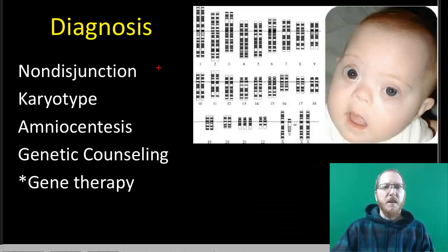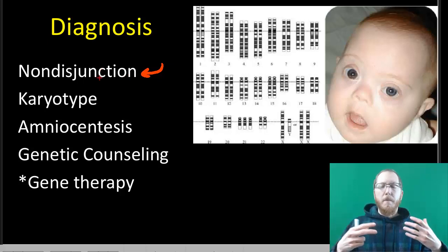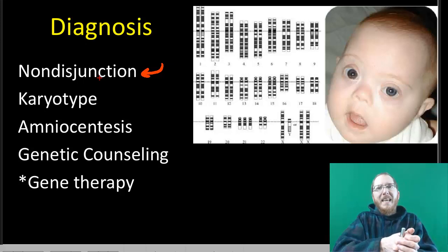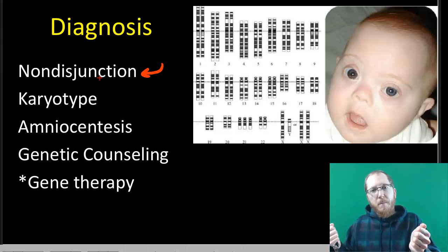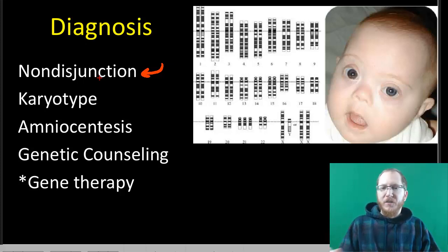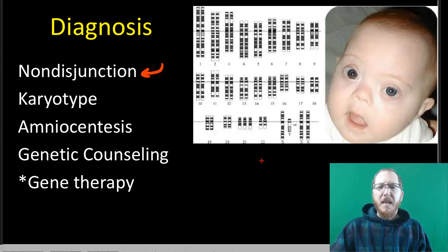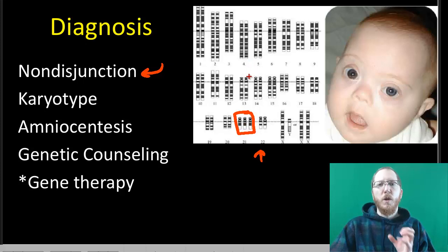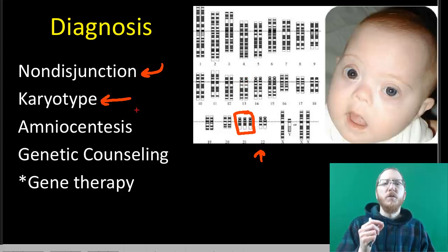To diagnose these conditions, if you want to find out if non-disjunction has occurred — where during meiosis the chromosomes fail to separate properly, resulting in extra or missing chromosomes — you can do a karyotype. A karyotype is an image taken at metaphase showing all the chromosomes, so you can pair them up and line them up to see if something's wrong. For example, a Down syndrome karyotype shows three copies of chromosome 21, called trisomy 21.